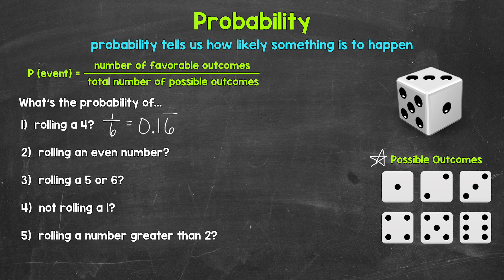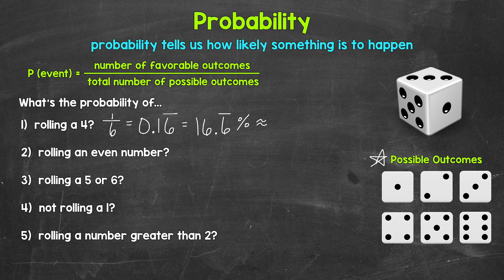...and then we have a repeating six, so this is a repeating decimal. We can convert the decimal to a percent by multiplying by 100 — a quick way to do that is move the decimal twice to the right. Our percent here is 16.6 repeating percent. We can leave the percent like that or round. Let's round to the nearest percent — rounding to the ones place. We have a six in the ones place with a six to the right in the tenths, so this rounds to approximately 17 percent. That's the probability of rolling a four.